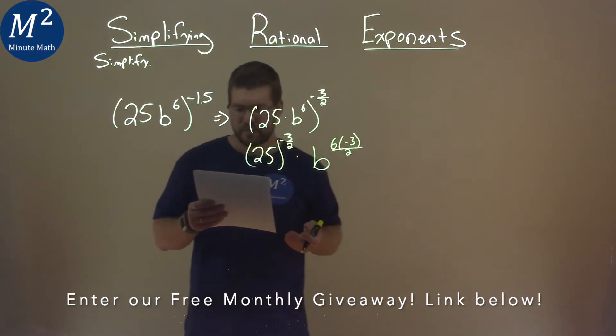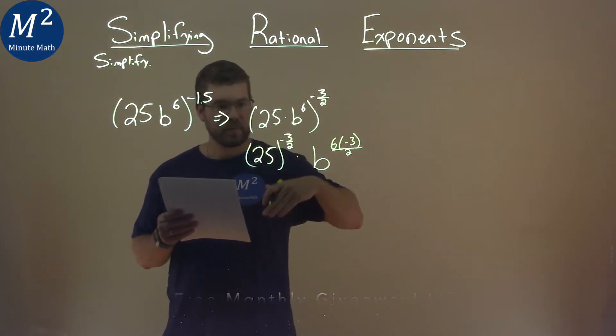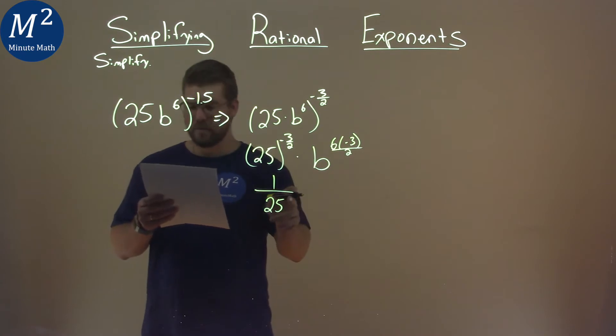How can we simplify this? A negative exponent means it kind of goes down to the denominator. So we're going to have 1 over, and 25 is going to be here, and that makes it the positive 3 halves.